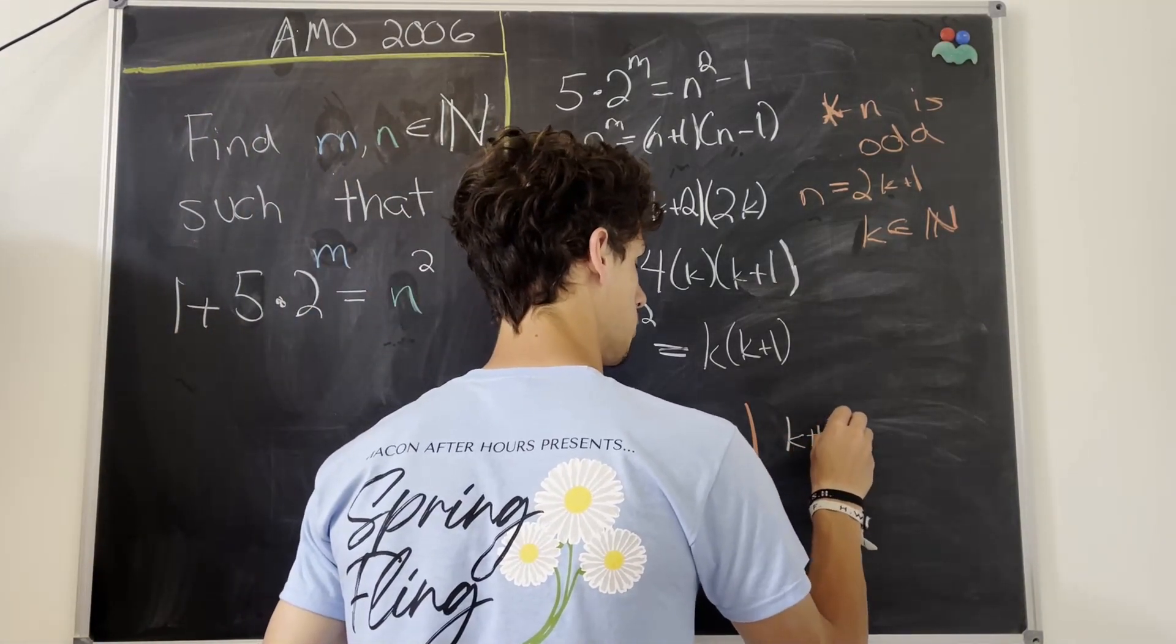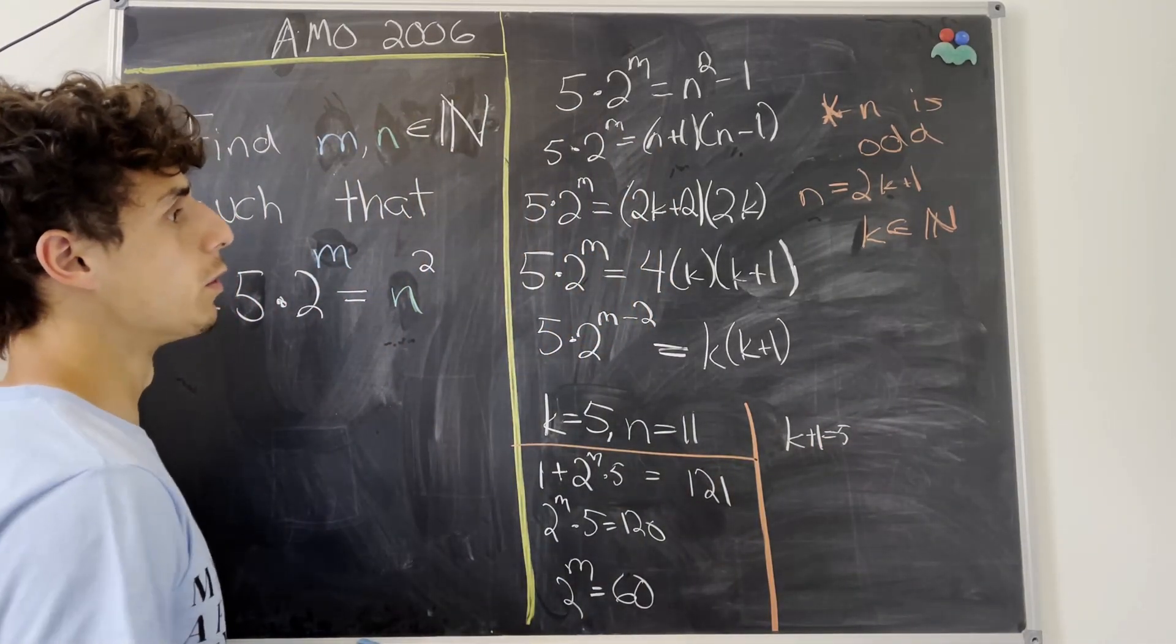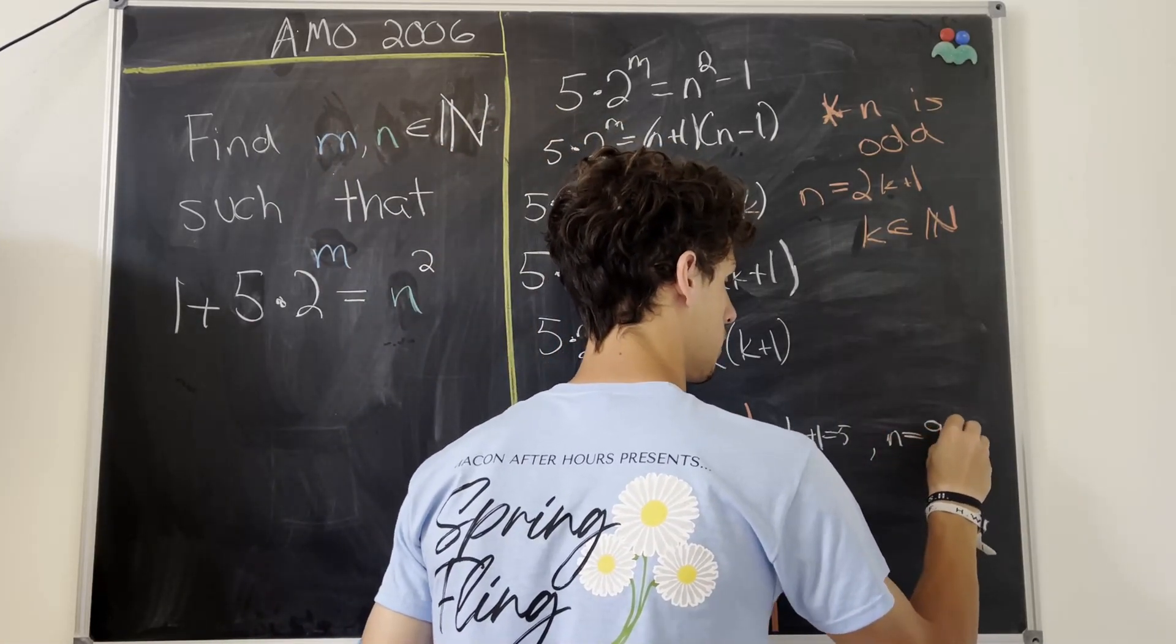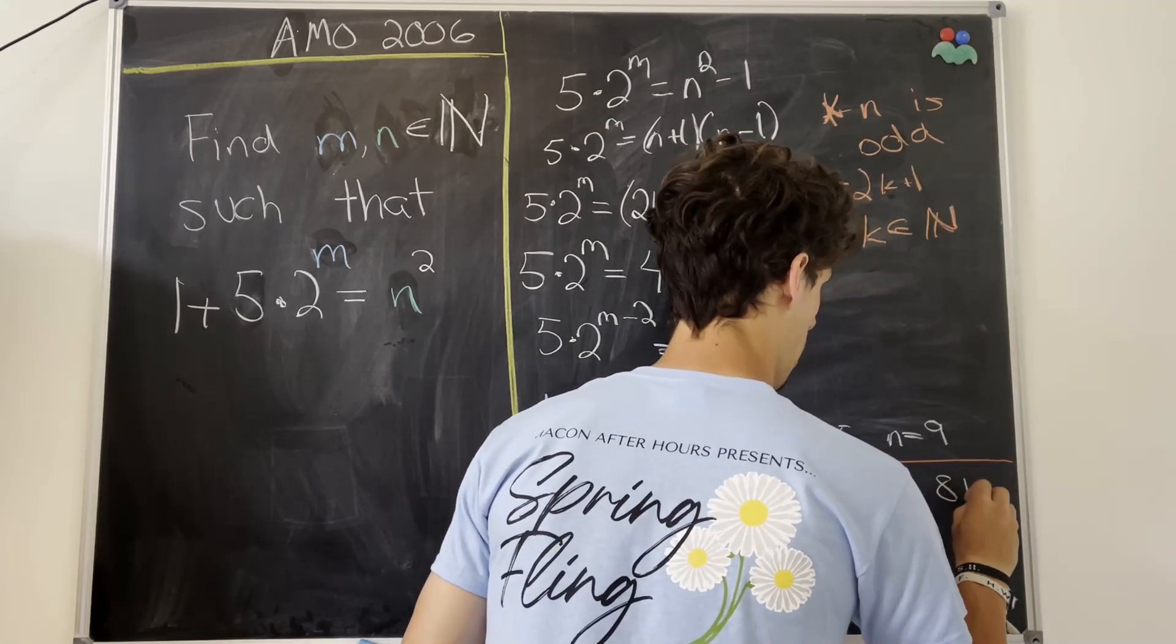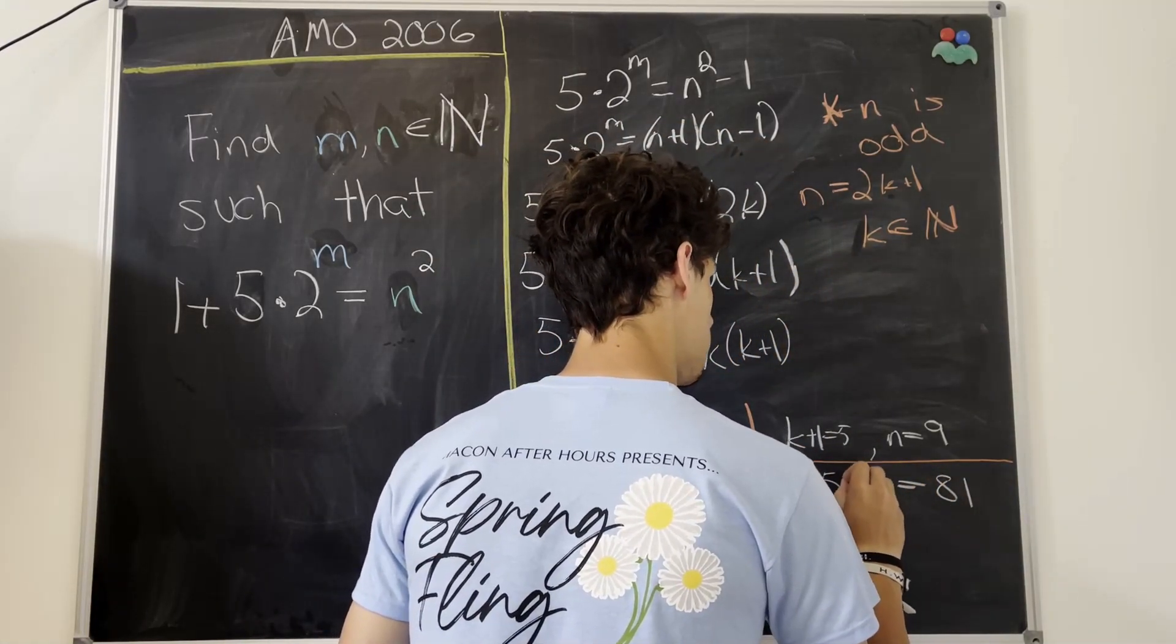We have k plus 1 is equal to 5. But in that case, k is equal to 4, which means that n equals 2 times 4 plus 1. That means n is equal to 9. So in this case, we'll have 81 equals 1 plus 5 times 2 to the m.